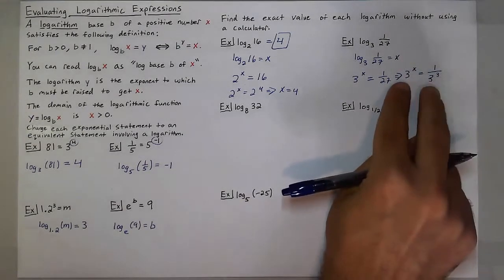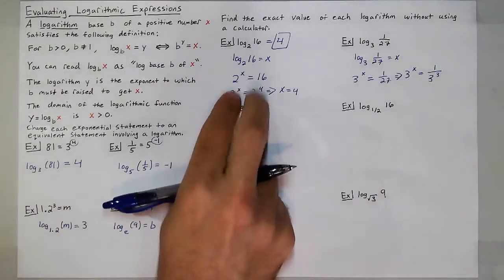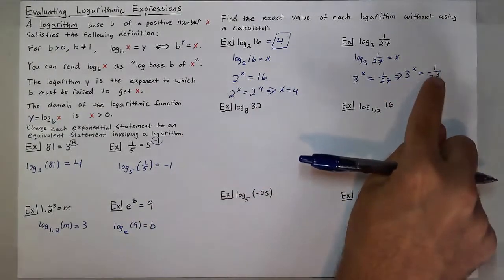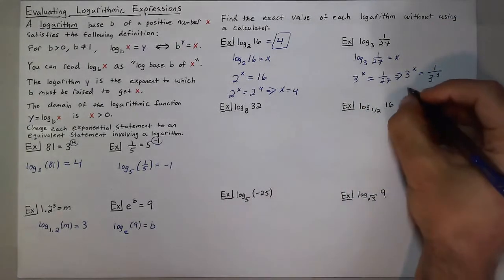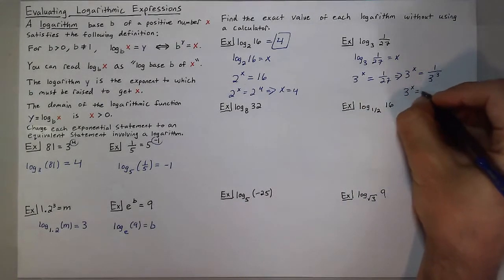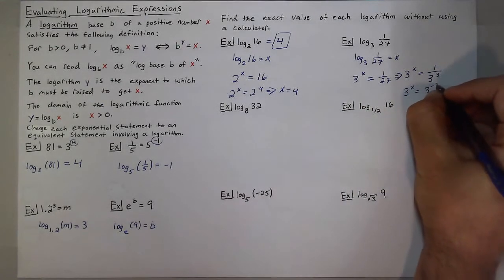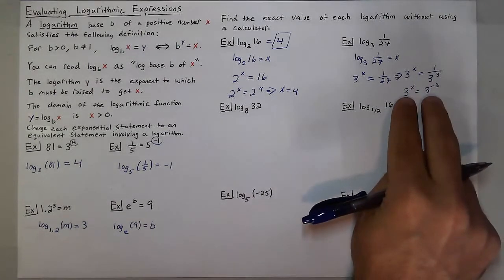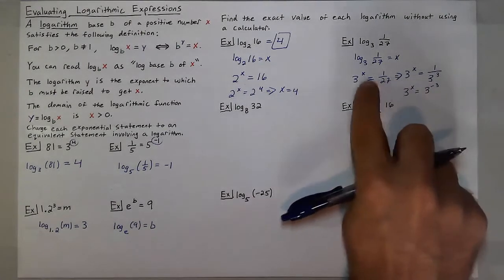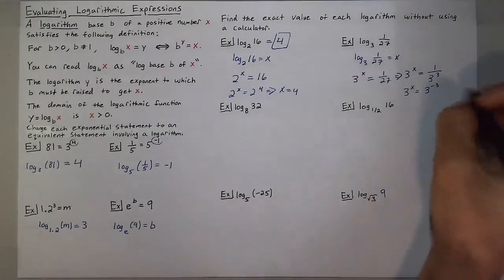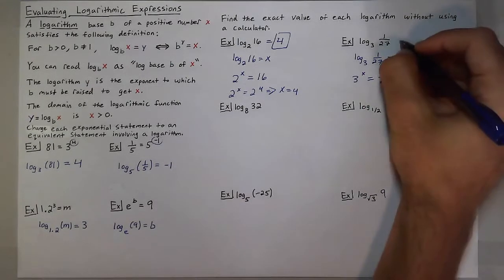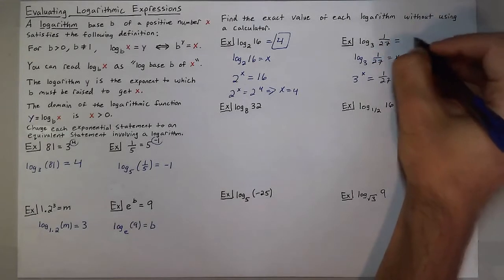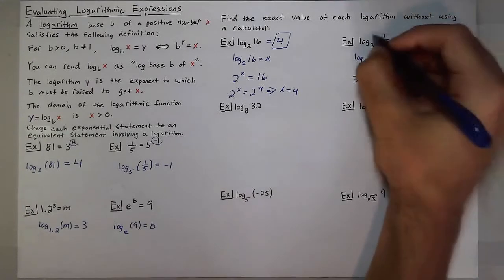So I have 3 to the x is equal to 1 over 3 cubed. And to get a matching similar base, I'll bring the 3 to the 3rd power to the numerator, making this 3 to the x is equal to 3 to the negative 3. And now you can see that the power I raise x to to get 1/27 is negative 3. So log base 3 of 1 over 27 is negative 3.